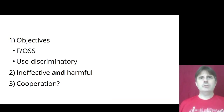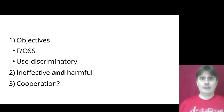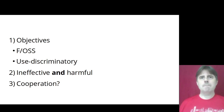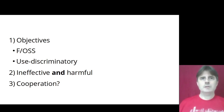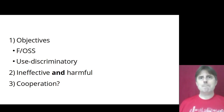I'm going to cover three broad areas. Firstly, the objectives of licensing schemes, both FOSS and use discriminatory. Secondly, I'll argue that use discriminatory systems are both ineffective and harmful and therefore a terrible idea, at least for OSI. And finally, I'll nonetheless explore what scope for cooperation might exist with use discriminatory communities for OSI.